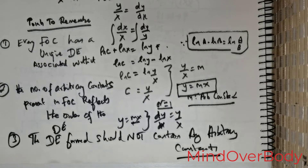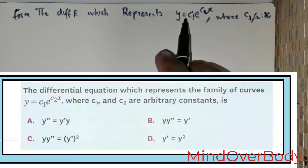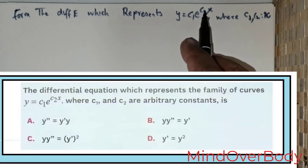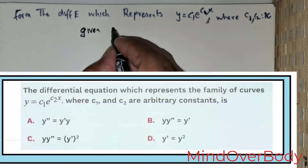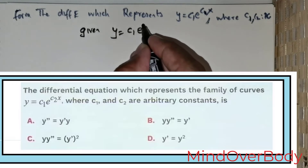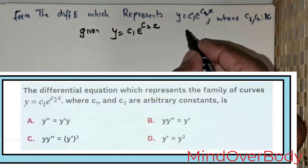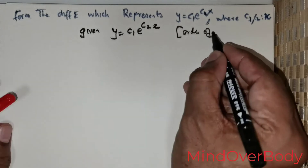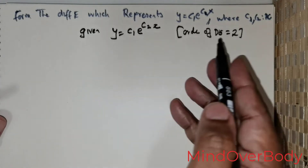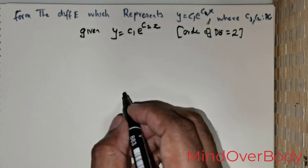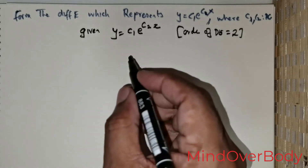We are given the question: find the differential equation which represents the family of curves y = c₁·e^(c₂x), where c₁ and c₂ are arbitrary constants. We have two arbitrary constants, so the order of the differential equation is going to be equal to 2. That means we will have to perform differentiation twice.